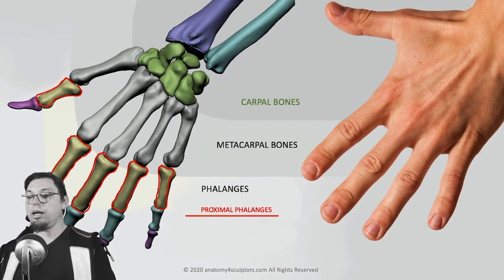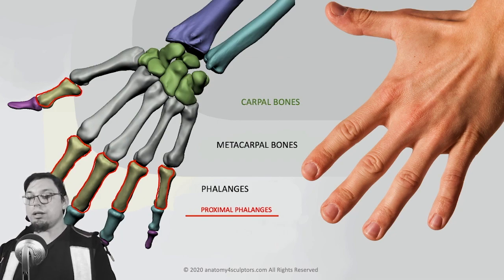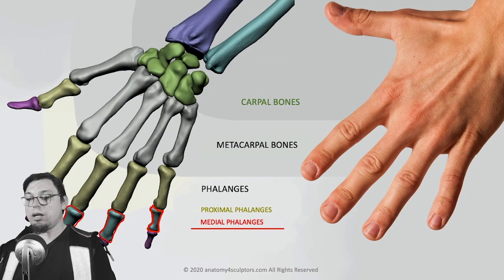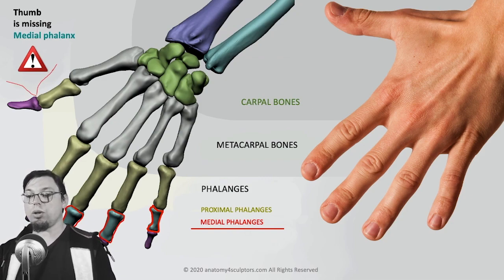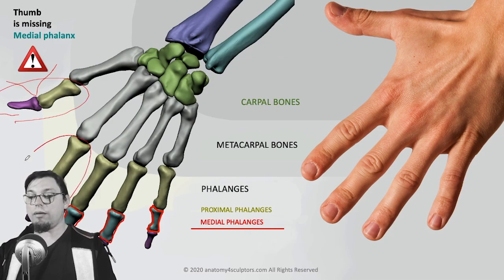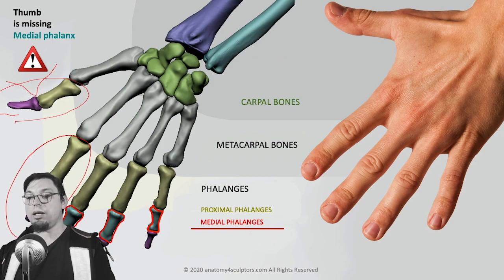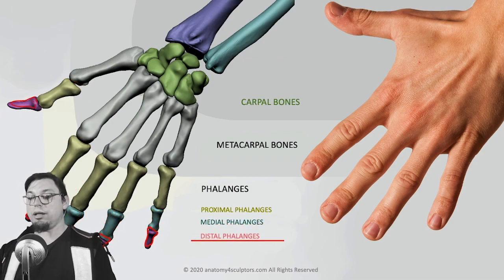Finally, the phalanges. There are proximal phalanges, medial phalanges, and distal phalanges. Every finger has three phalanges, but the thumb has only two — it is missing the medial phalanx. So the thumb has only a proximal and a distal phalanx.